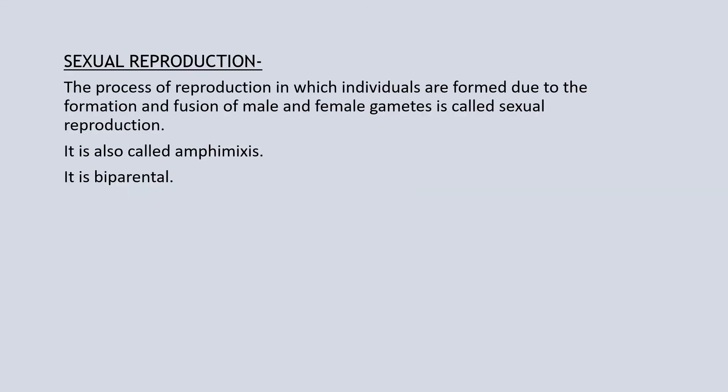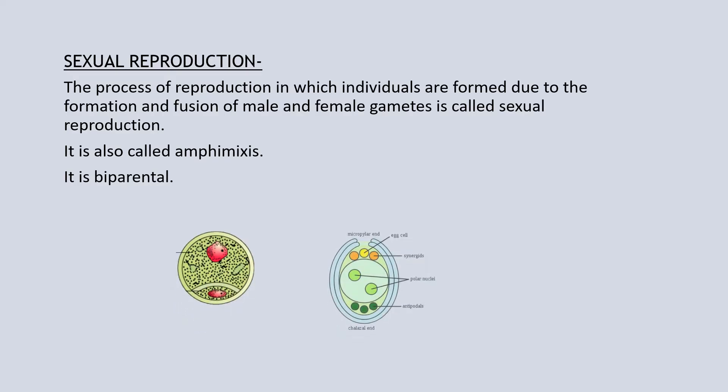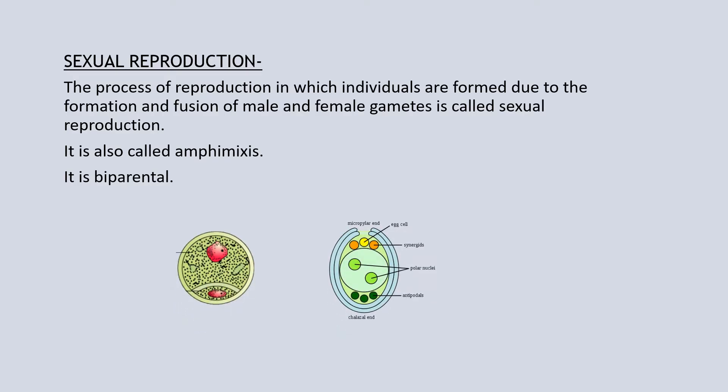Structure of Flower and Sexual Reproduction. The process of reproduction in which individuals are formed due to the formation and fusion of male and female gametes is called sexual reproduction. It is also called amphimixis. It is bi-parental, that is, two parents are involved.